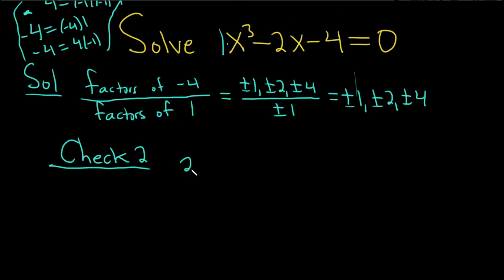So when you check, you use something called synthetic division. So basically, you write down the 2 and you put a little bracket. Then you write down the coefficients of your polynomial, which are 1, 0, right? There's really an invisible 0x squared here, negative 2 and negative 4. So we're going to use synthetic division to check if 2 is a solution to this equation.